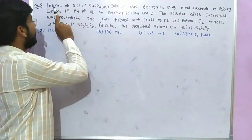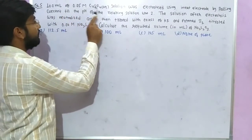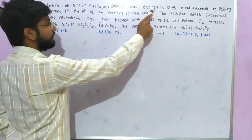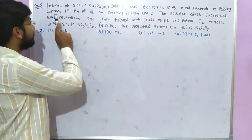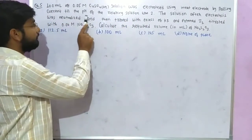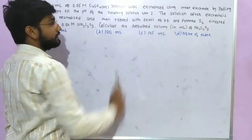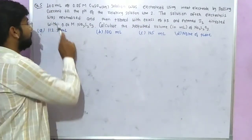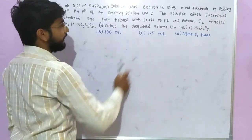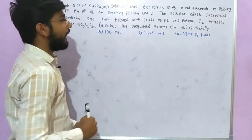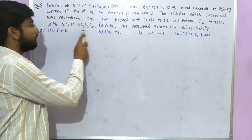Here is the question. 100 ml of 0.05 molar copper sulfate aqueous solution was electrolyzed using inert electrodes by passing current till the pH of the resulting solution was 2. The solution after electrolysis was neutralized and then treated with excess of KI, forming iodine gas which was titrated with 0.04 molar hypo solution.